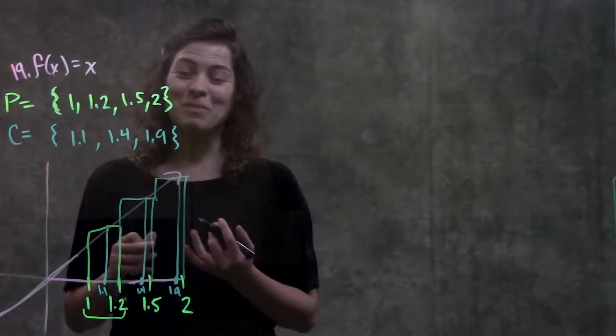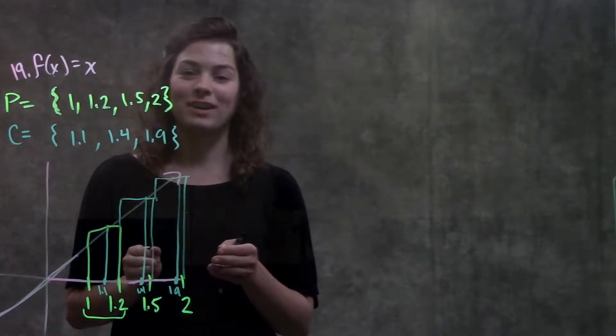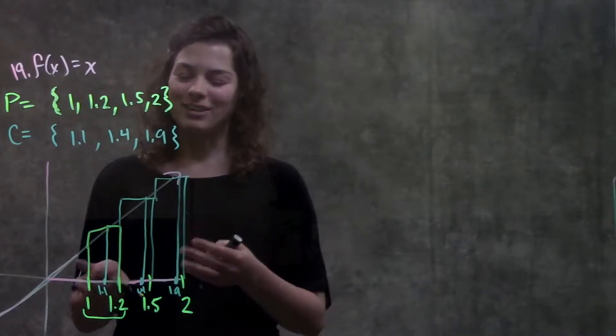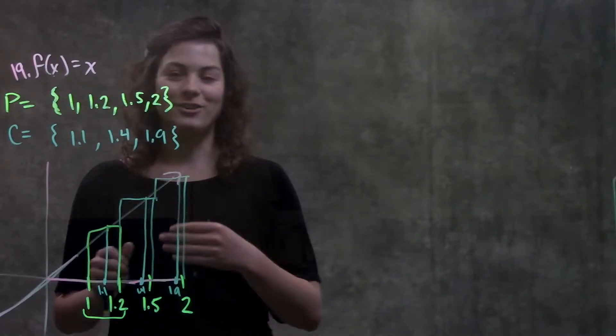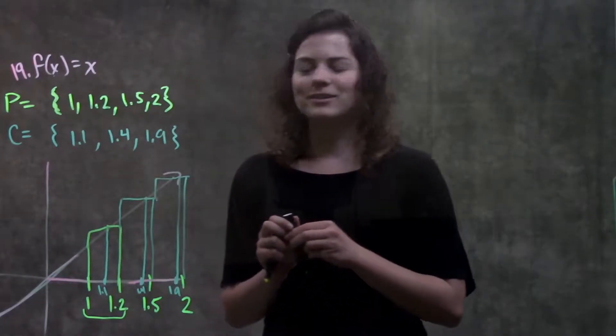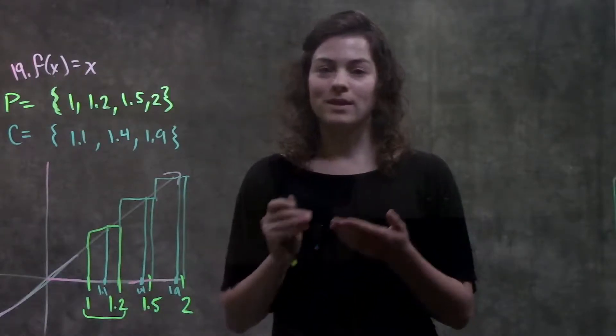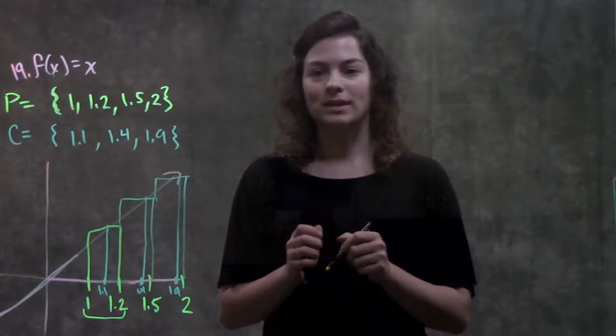Okay. And remember, Riemann sums, we're finding the area of each of these rectangles, adding it together, and using that as an estimate for the area under this graph. Okay, so remember, area of a rectangle is just width times height. So I just go rectangle by rectangle.